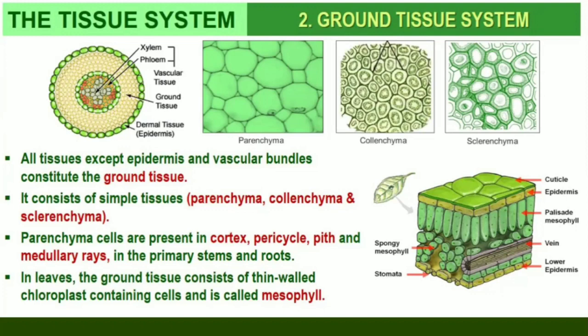The Ground Tissue System. All tissues except epidermis and vascular bundles constitute the ground tissue. It consists of simple tissues such as parenchyma, collenchyma, and sclerenchyma. Parenchymatous cells are usually present in cortex, pericycle, pith, and medullary rays in the primary stems and roots. In leaves, the ground tissue consists of thin-walled, chloroplast-containing cells and is called mesophyll.